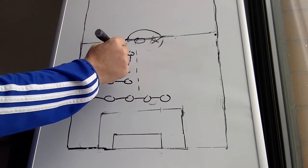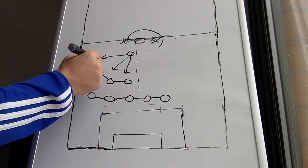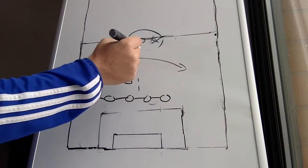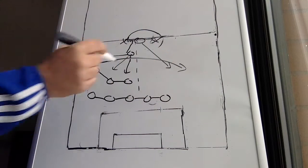One striker is going to hustle back here to help out. It depends where the ball is. He can really come and pressure the ball from any angle. If this ball gets switched to the other side of the field, this striker now will rotate up top as this striker runs in.